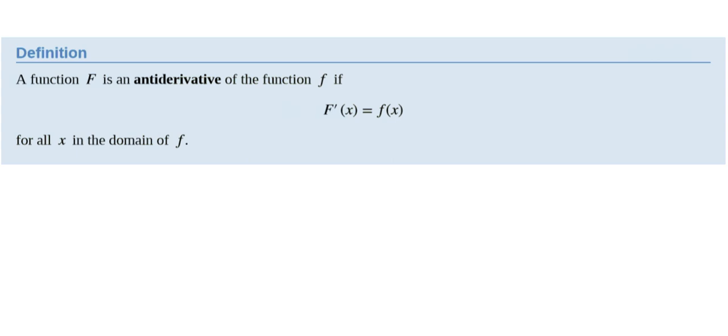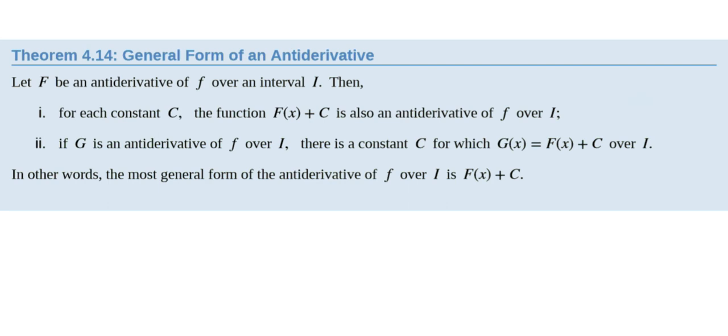There's a theorem. The theorem is super important. So we let capital F be an antiderivative of little f. For each constant C, the function capital F of x plus C is also an antiderivative of little f. Why? Because if you take the derivative of capital F, and then you take the derivative of capital F plus a constant, well the derivative of that constant is zero. So the derivative of capital F plus C is the same as the derivative of capital F.